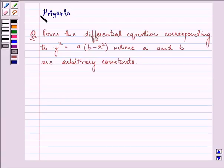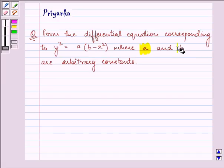Hi and how are you all today? My name is Priyanka and I shall be helping you with the following question. Form the differential equation corresponding to y² = a(b - x²) where a and b are arbitrary constants.